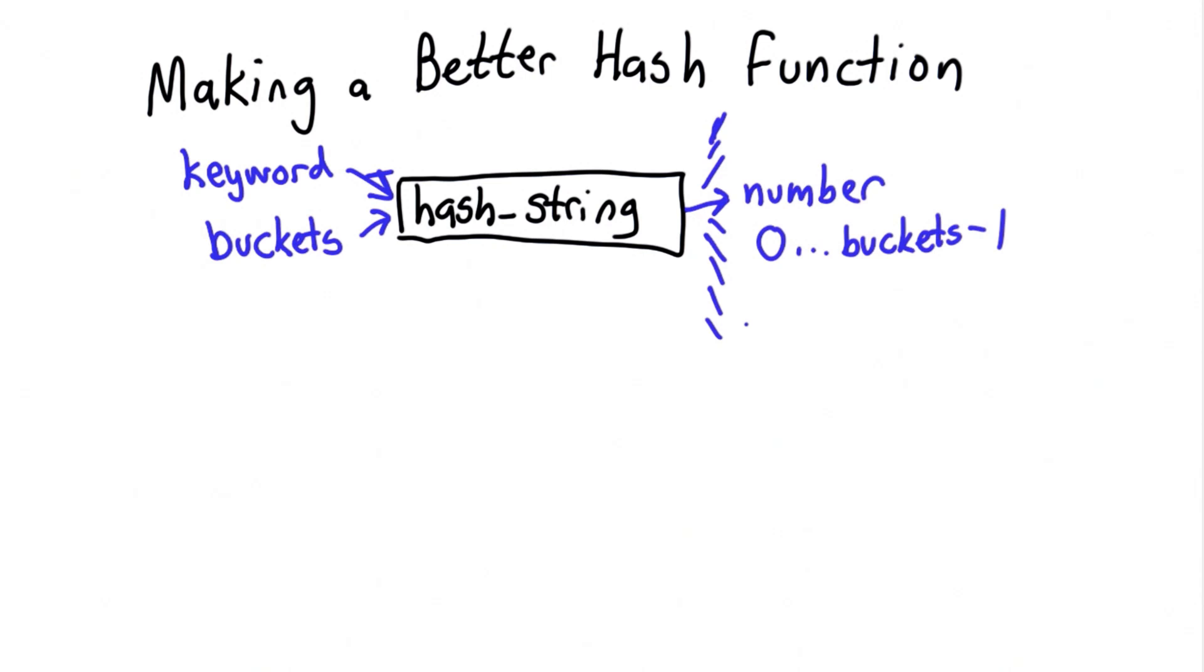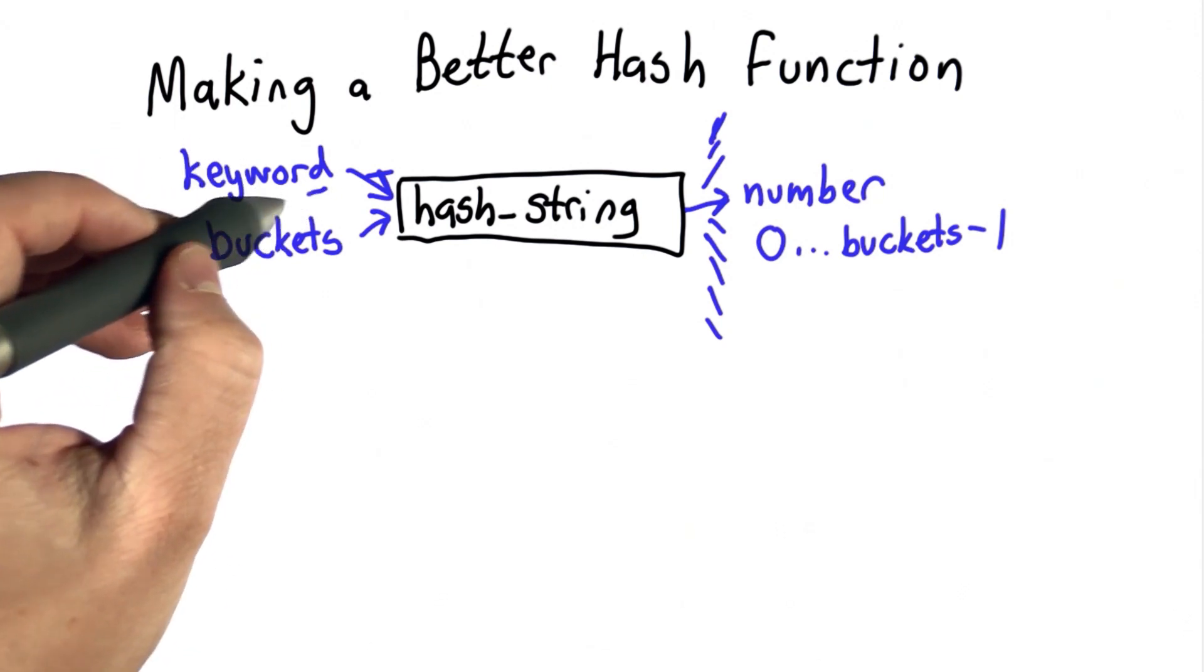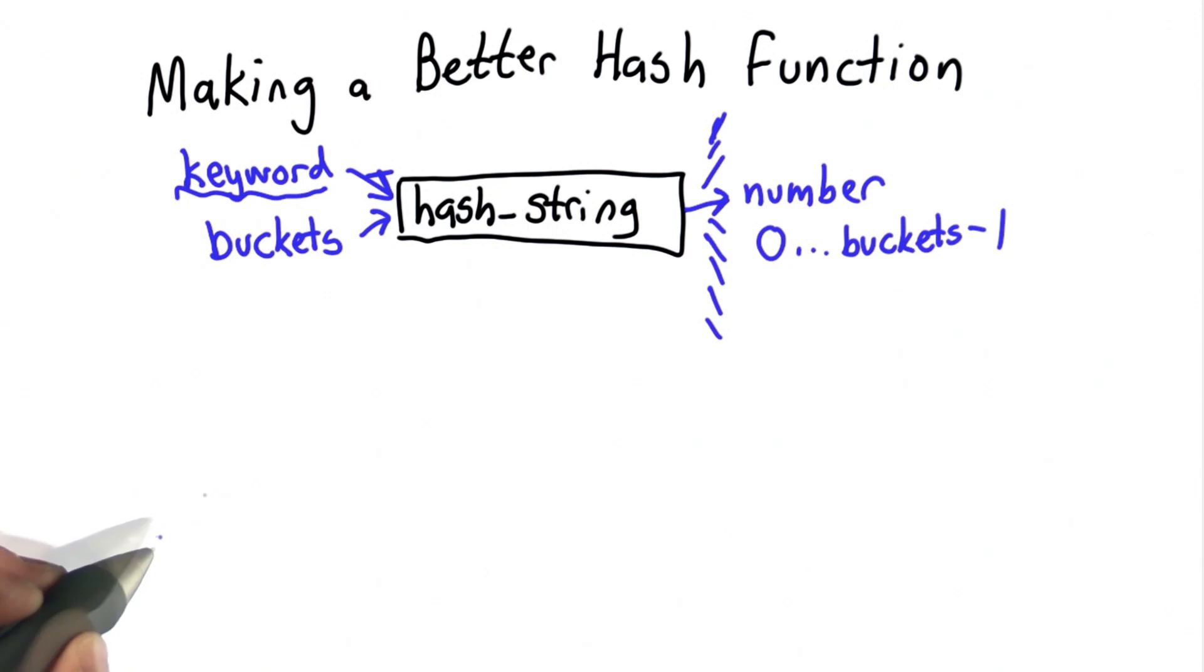In order to do better than we were doing before, we need to look at more than just one letter of the keyword. If we look at just the first letter, we're not going to do better than having a limited number of buckets and a bad distribution. What we want to do is something that's going to look at all the letters of the keyword, not just the first letter, and based on all the letters, we'll decide the appropriate bucket.